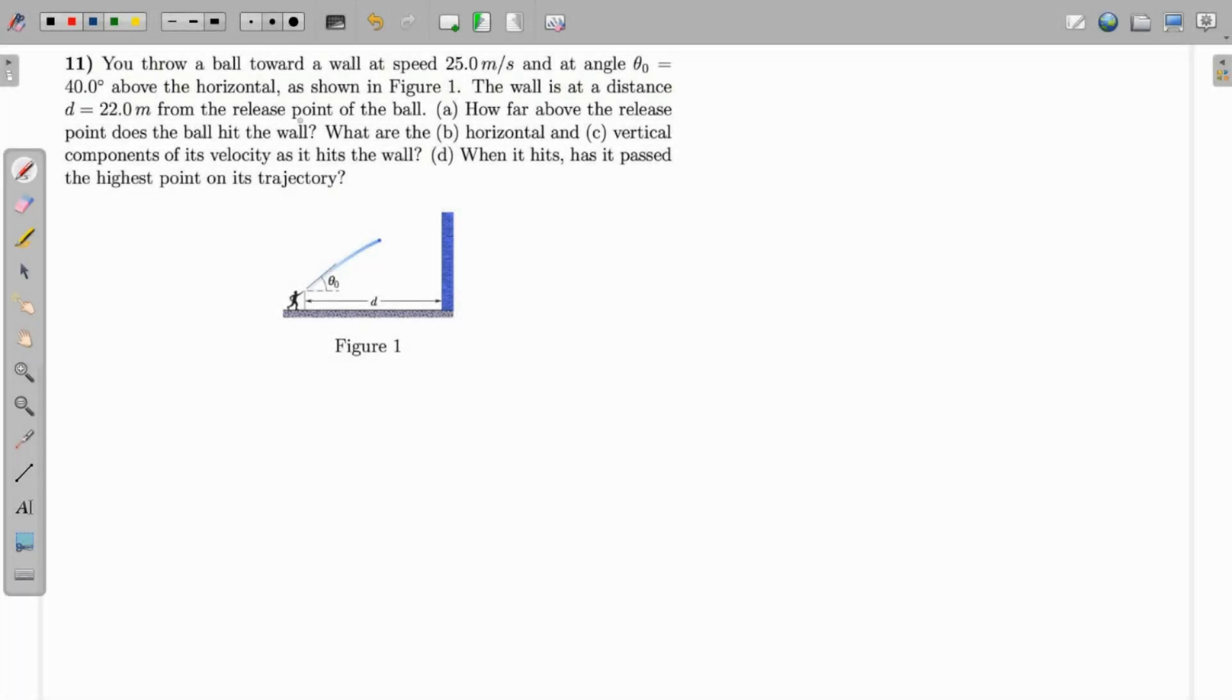This question is to throw a ball toward a wall at a speed of 25 meters per second at an angle of 40 degrees above the horizontal, and the wall is at a distance of 22 meters. So how far above the release point does the ball hit the wall? So first,